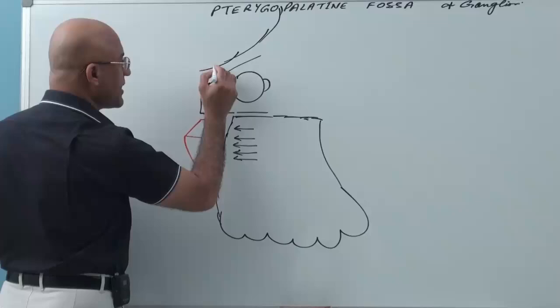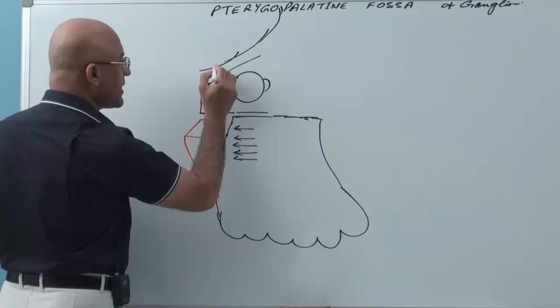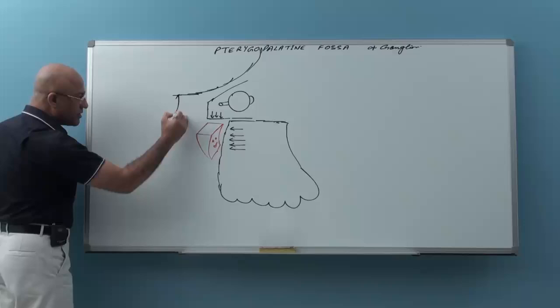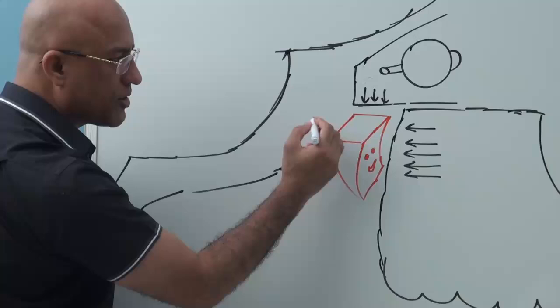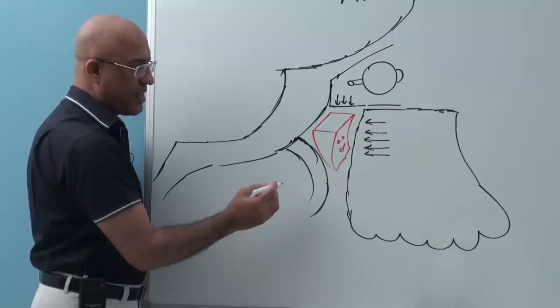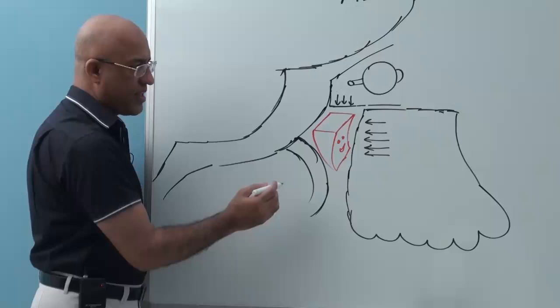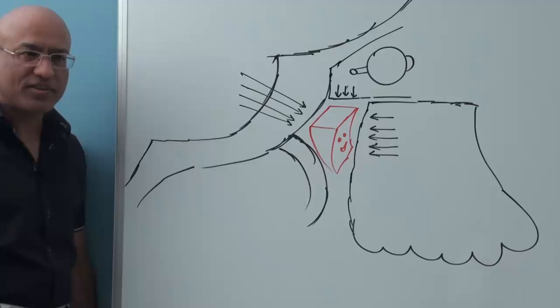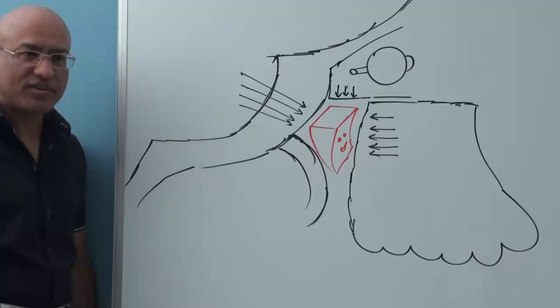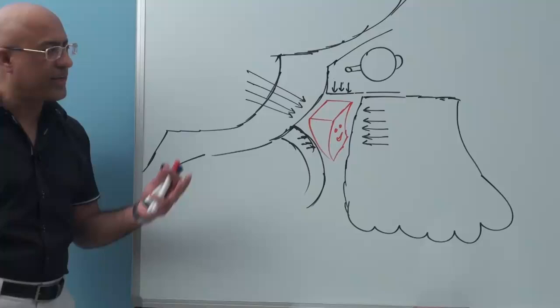Other important relationships: here is the anterior cranial fossa, and here is the middle cranial fossa. This is the sphenoid bone — body of the sphenoid bone — and this is the pterygoid process. So this fossa is below the apex of the orbit, behind the maxilla, especially behind the supramedial part of the maxilla, and it is antero-inferior to the middle cranial fossa, just anterior to the pterygoid process of the sphenoid bone.